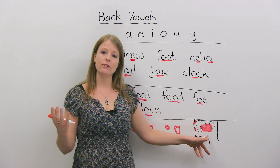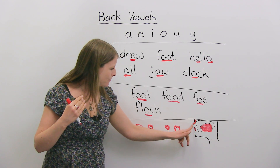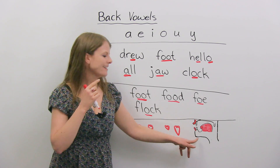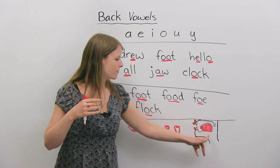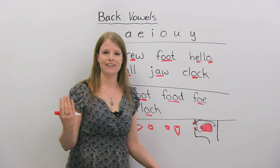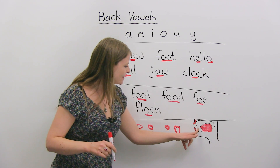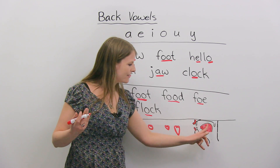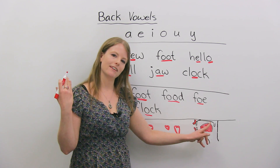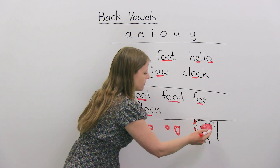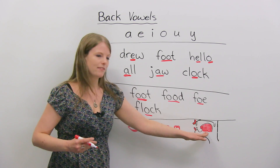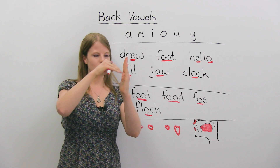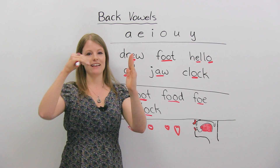The other thing you want to pay attention to is your tongue. These are your lips, these are your teeth, this is your chin, your neck, and this red thing is your tongue. Is your tongue touching your teeth? Is your tongue touching the top of your mouth? Or is your tongue hanging out kind of close to the back of your mouth? For back vowels, your tongue is going to be more towards the back. So your tongue is not touching your teeth — your tongue is a little bit back.